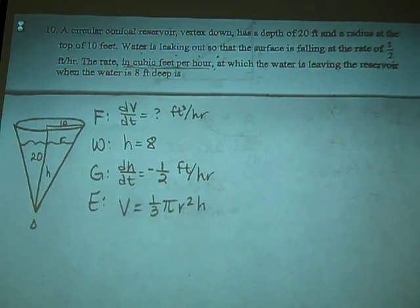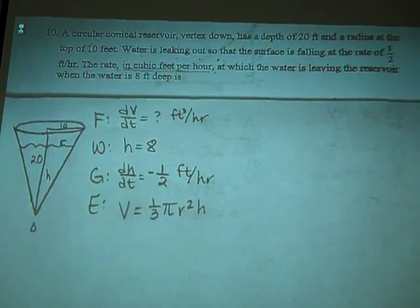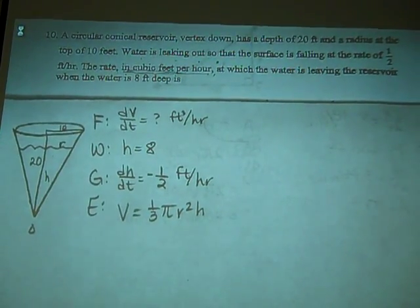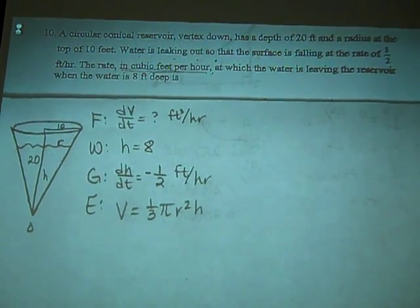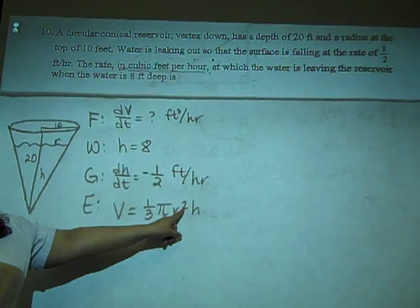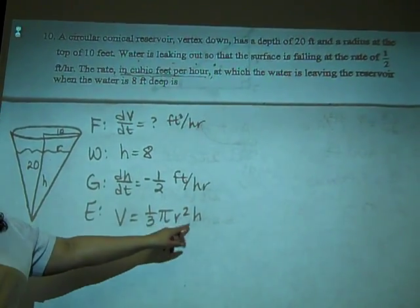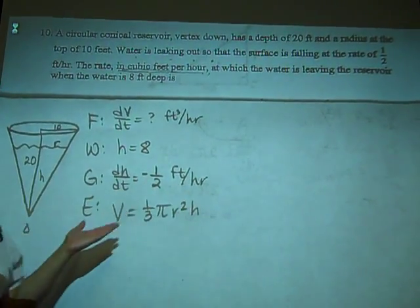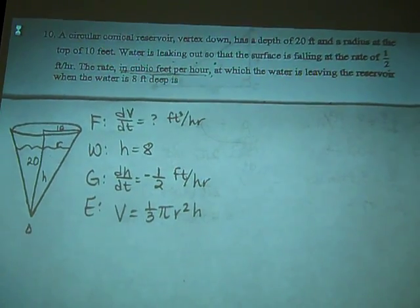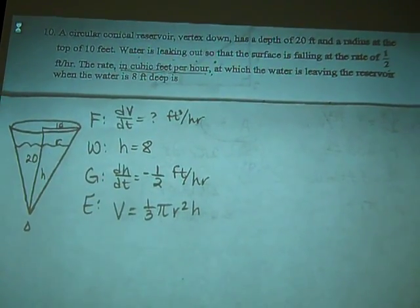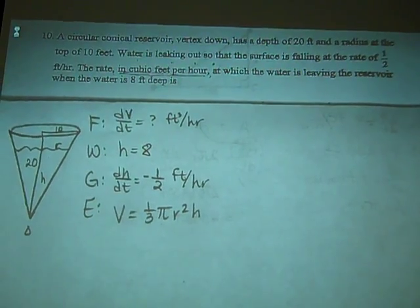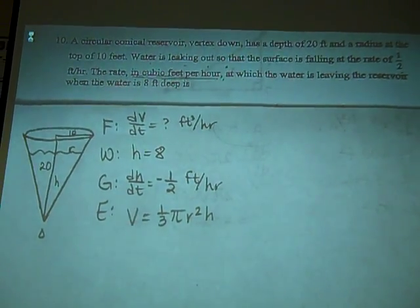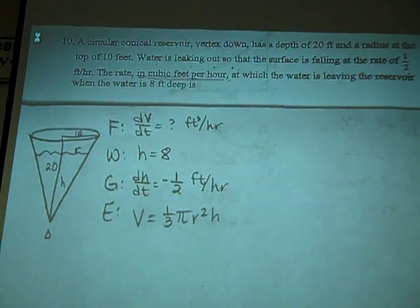Now, before we get going, think before you act. Imagine you took that derivative right now. We would wind up with dR/dt because we have three variables: V, R, and H. What rule would we have to use to take this derivative? Product rule, which would produce a dR/dt. Do we have anything about the radius? No. We don't know R, we don't know dR/dt. So that's not a good idea. What do we need to do? We need to get rid of it.